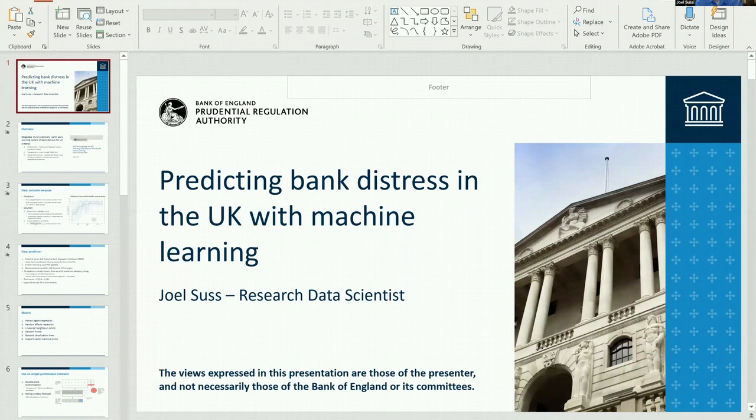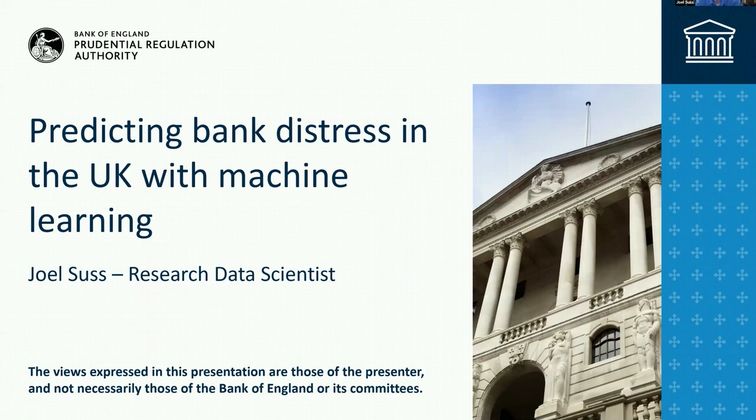Without further ado, let's have our first speaker, Joel Suss from the Bank of England. Joel, you have 20 minutes to speak and 10 minutes for Q&A. Thanks for that introduction — I'm very happy to be presenting this piece of work here at this conference. My name is Joel Suss, I'm a research data scientist at the Bank of England, and I'll be presenting this work on predicting bank distress in the UK.